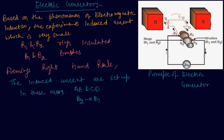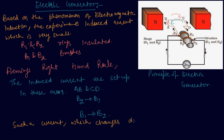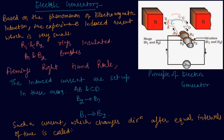In the other half of the rotation, the arm CD starts moving up, so it is now anti-clockwise, and the current flows from brush B1 to B2. Such a current, which changes direction after equal intervals of time, is called alternating current — the type we use in our homes.